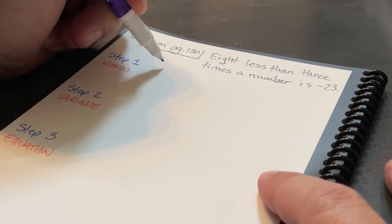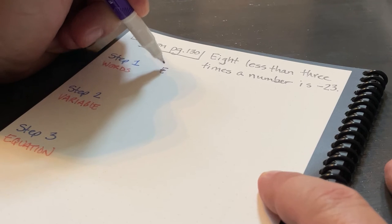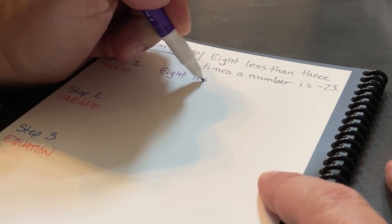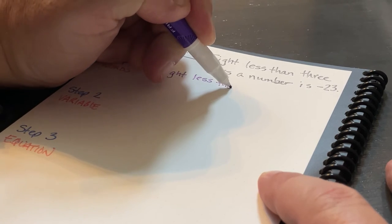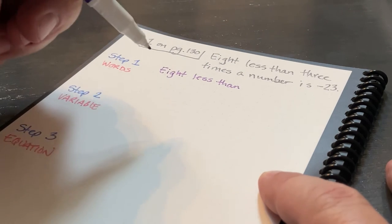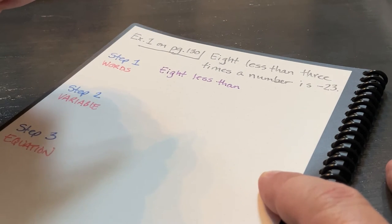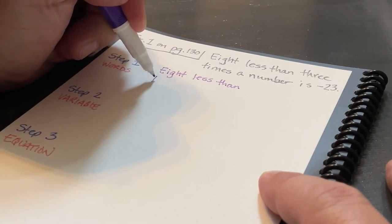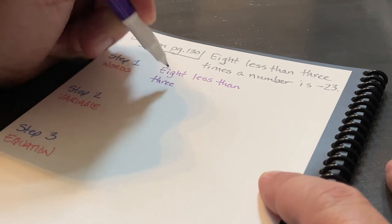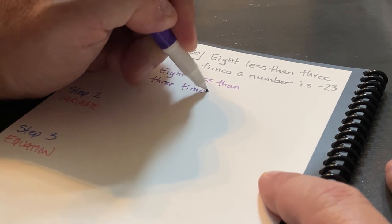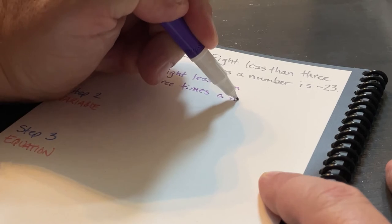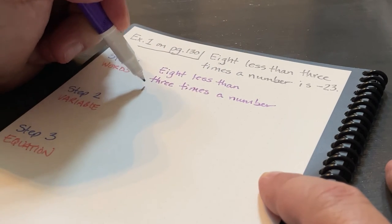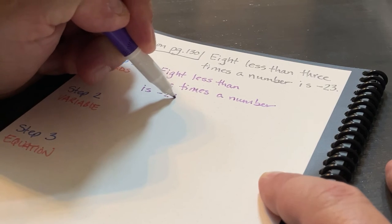Let's look at Example 1 on page 131. We have: eight less than three times a number is negative 23. We want to pick out the important words. So 'eight less than' would be an important piece, 'three times a number' another important piece, and then finally 'is negative 23.'